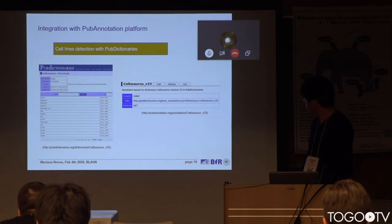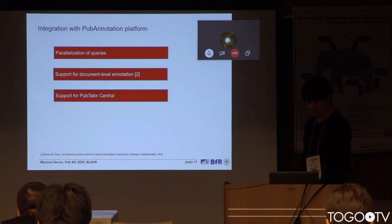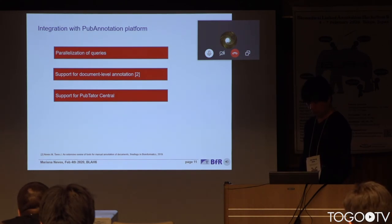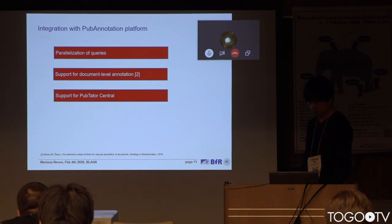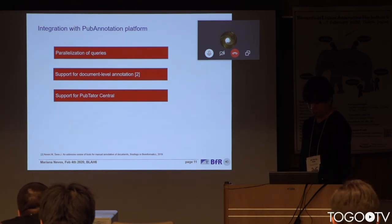However, we still have some issues with respect to the precision of detected entities, since many false positives are usually detected. There are also issues we would like to discuss or collaborate on with the PubAnnotation team. Queries to PubAnnotation still take some time given that we need to query up to 200 publications in real-time. We would like to discuss solutions to speed up this process, such as parallelization of queries or retrieval of multiple publications in a single query. Further, we would like to suggest support for document-level annotations, which is a feature not supported by many annotation tools, as we recently noticed while preparing a survey on annotation tools.